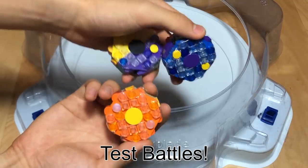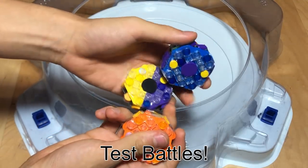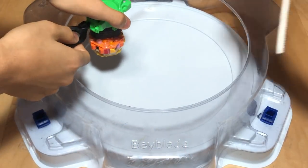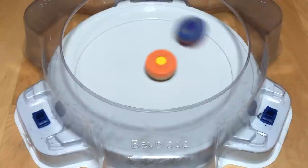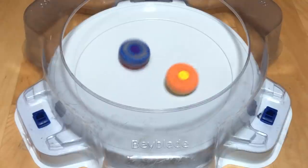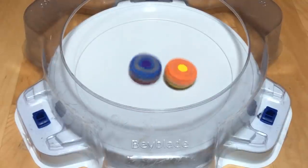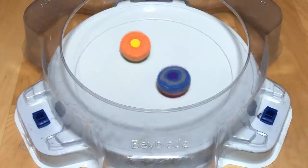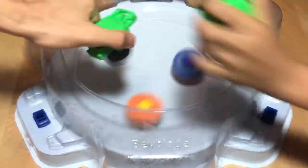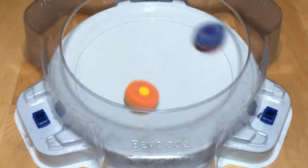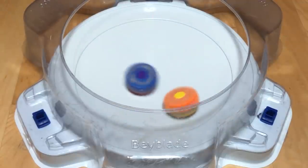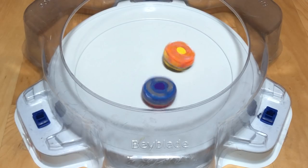Alright, now we're going to do some test battles with their combos, with Apollos being left spin, and Eclipse and Artemis being right spin. Apollos versus Artemis. Three, two, one, let it rip. Oh, nice hit. Three, two, one, let it rip. Oh my goodness, why am I scraping so much?